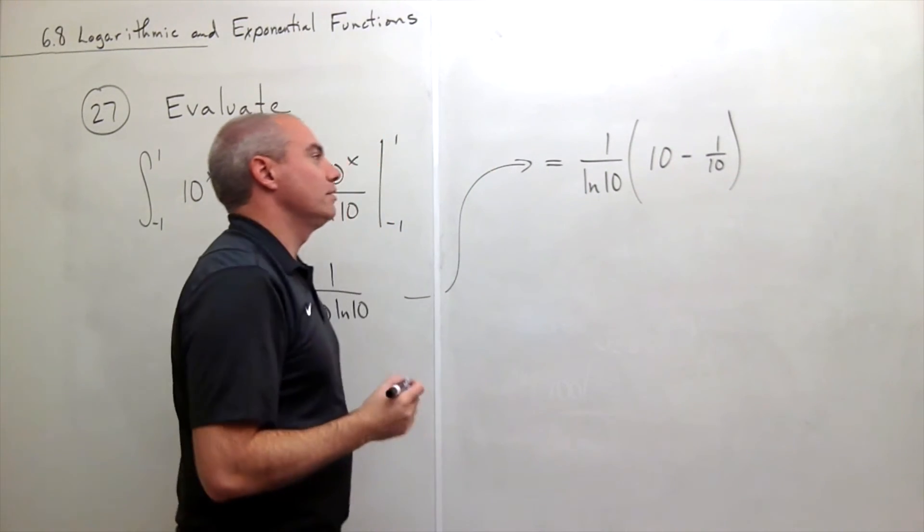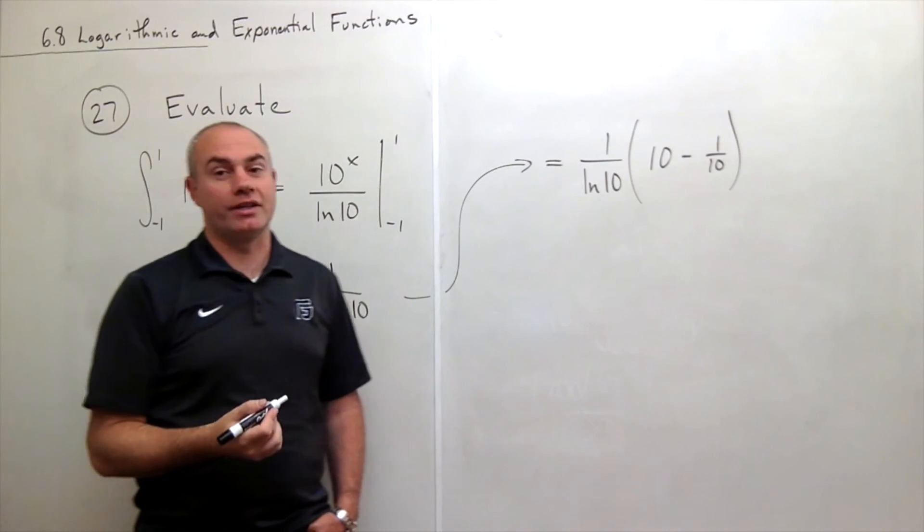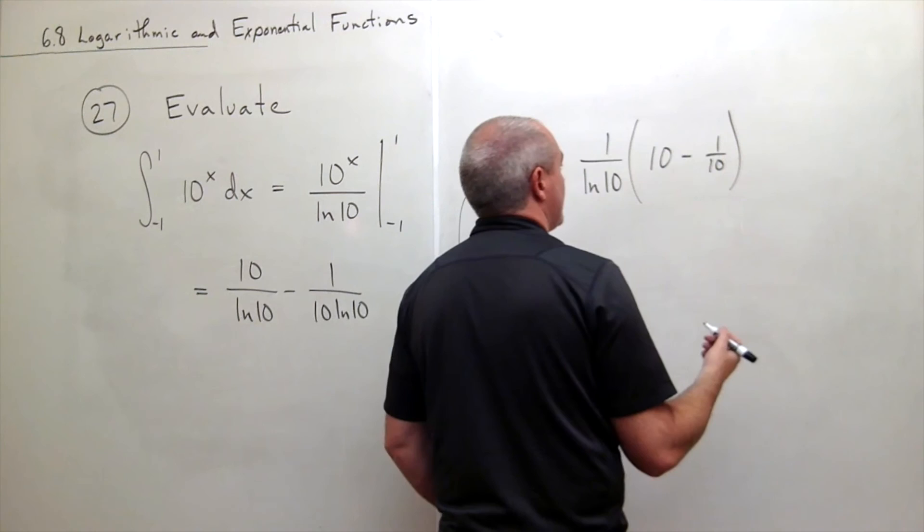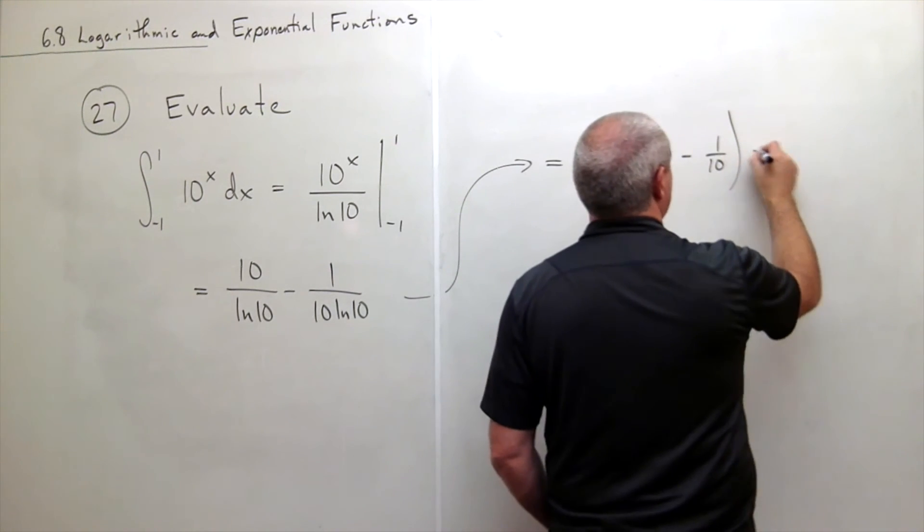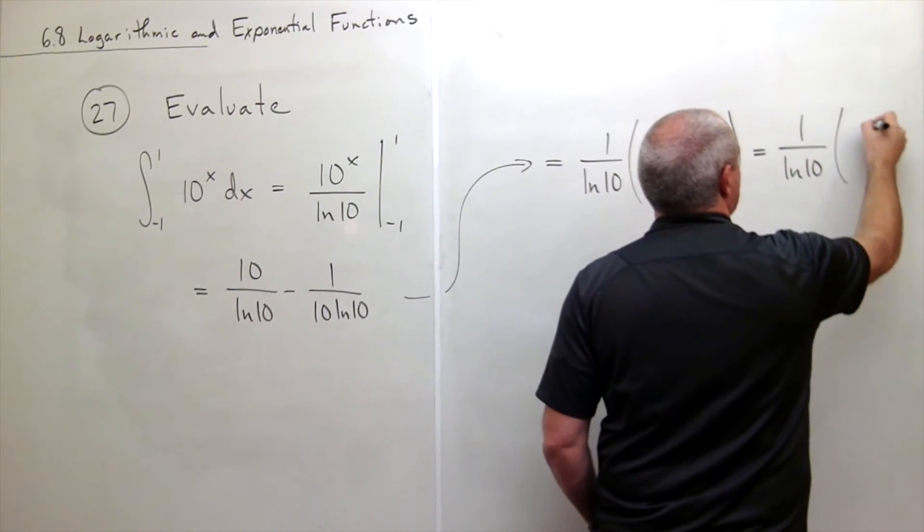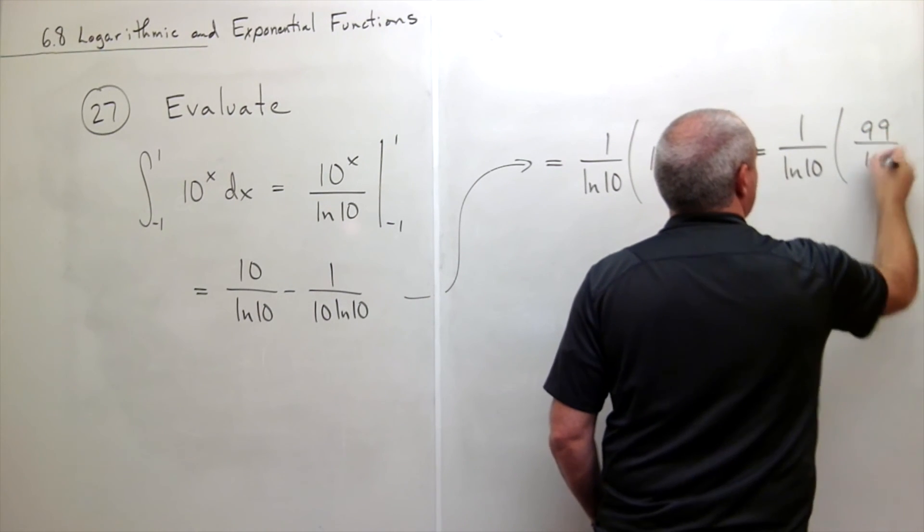10 is 100 tenths, and so minus 1 tenth is 99 tenths. So I could write this as 1 over ln 10 times 99 over 10.